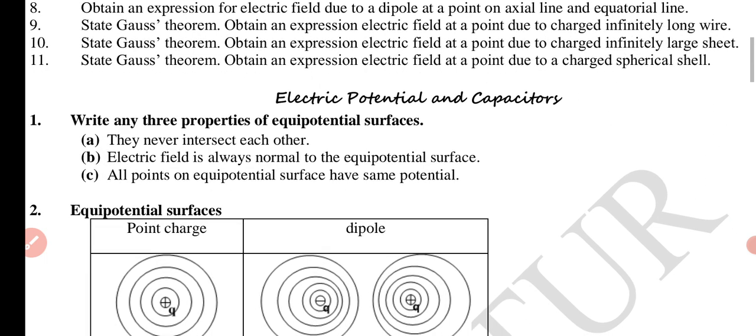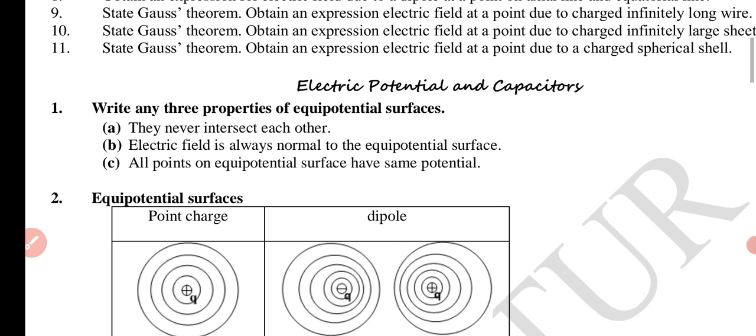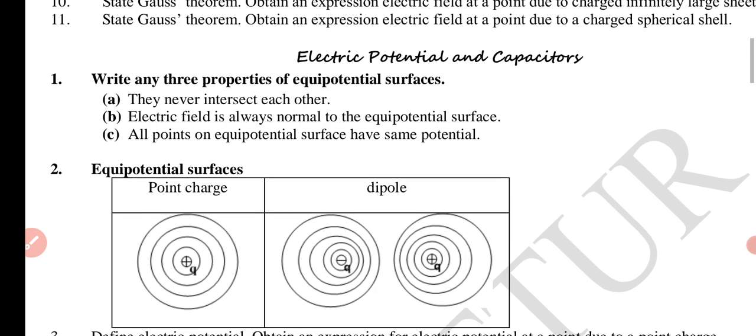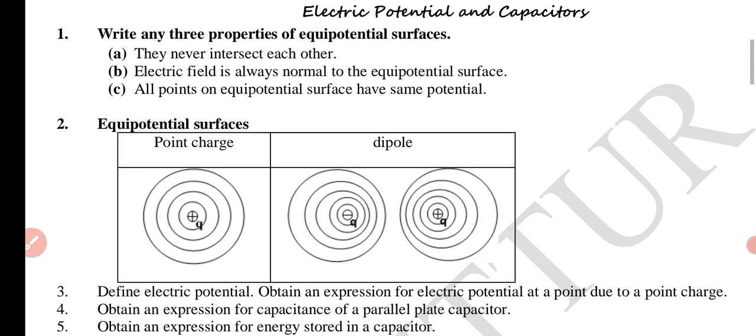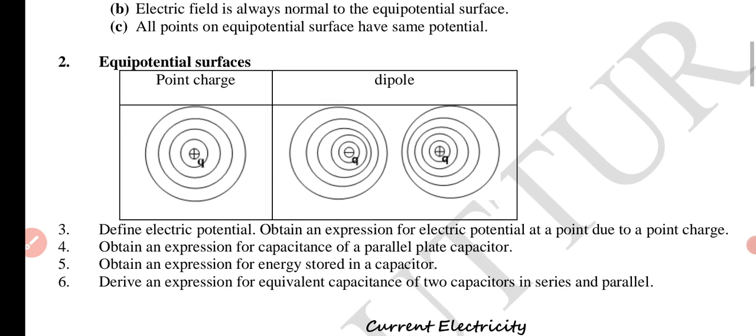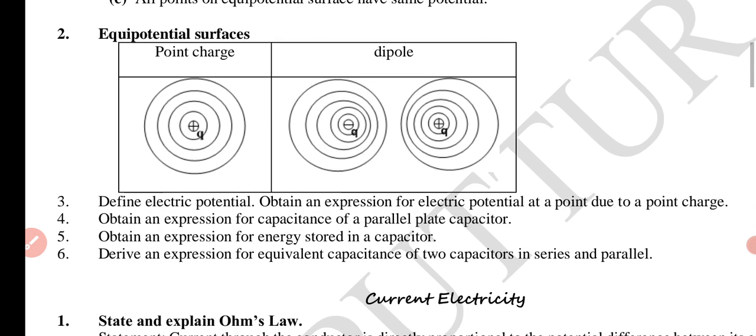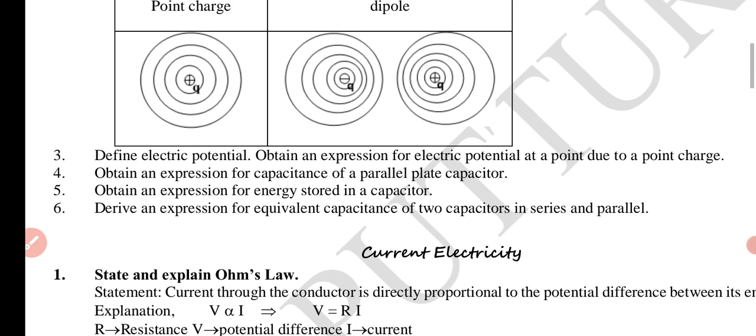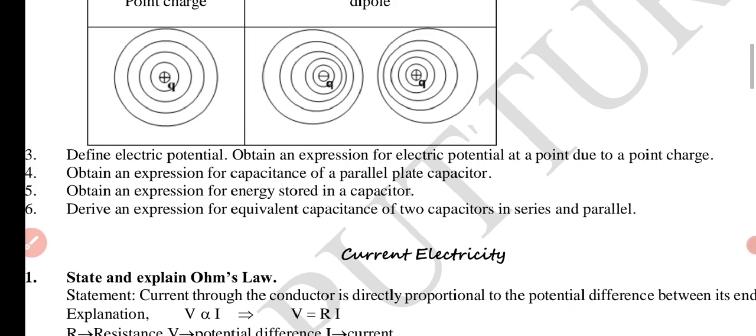Chapter 2.1 Electric potential and capacitors. Any three properties of equipotential surfaces: they never intersect each other, electric field is always normal to the equipotential surface, all points on equipotential surface have same potential. Equipotential surfaces for point charge and dipole.